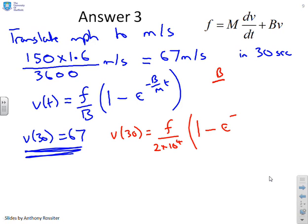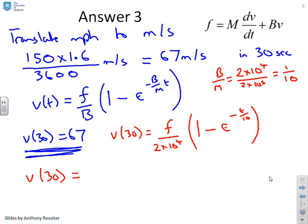So V of 30 equals F over 2 times 10 to the 4 into 1 minus E to the minus. Now B over M, maybe I'd better do this over here so we can see. So B over M equals 2 times 10 to the 4 divided by 2 times 10 to the 5, which is 1 over 10. So we've got here E to the minus B over MT is E to the minus T over 10. And you remember we've got T equals 30.